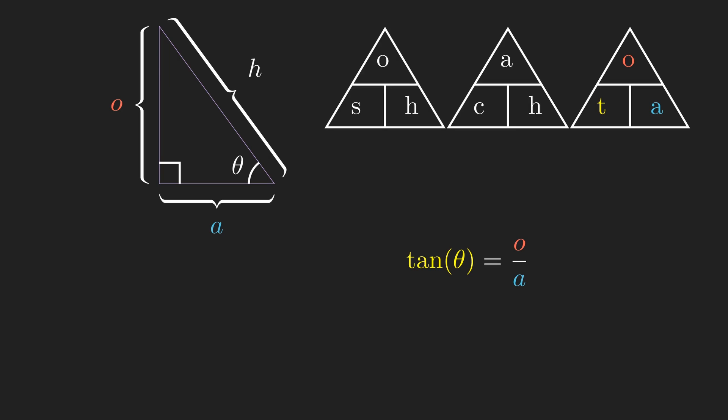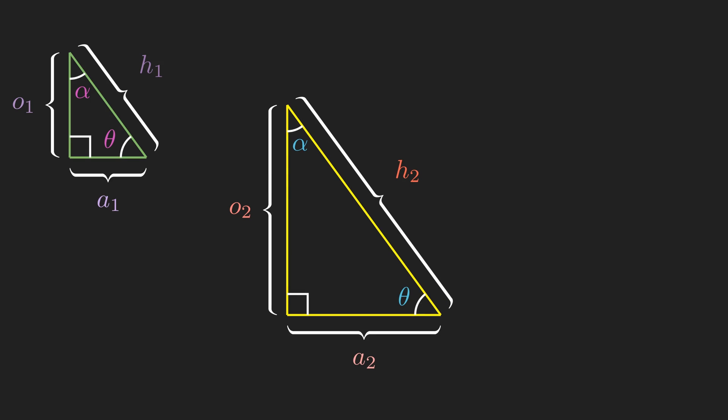To begin with, we need to understand exactly what these relationships mean. What exactly is sine? To answer this, let's start with two similar triangles, that is, two triangles with different length sides, but the same angles.